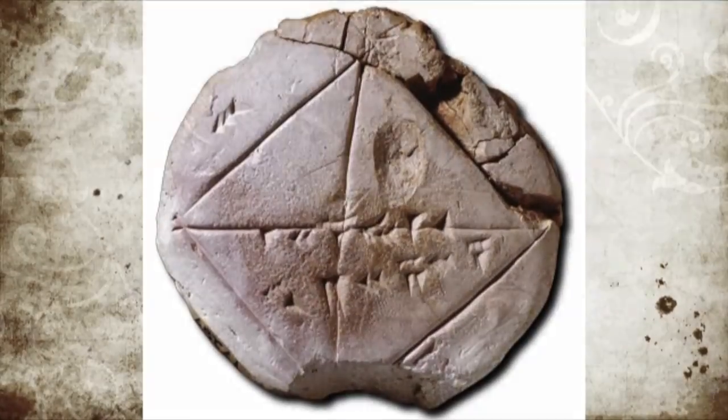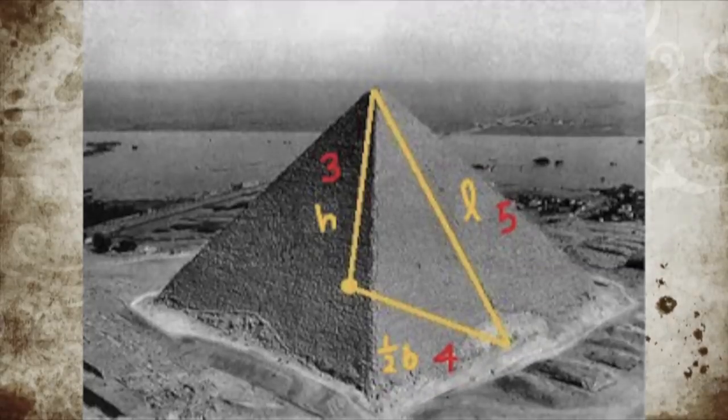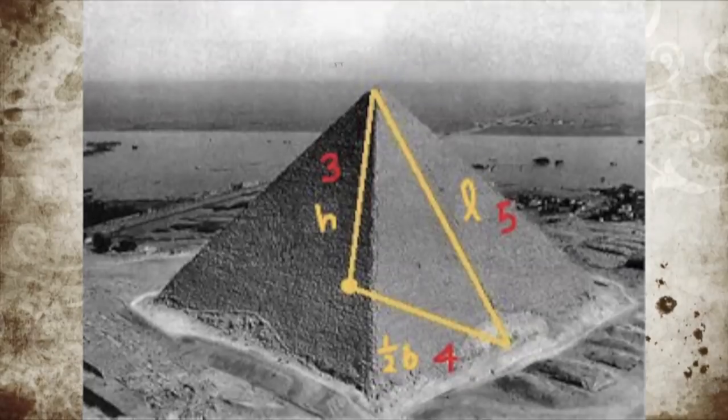However, this knowledge appears to have been lost during later periods in Babylonian history. In addition, there is evidence that the ancient Egyptians used Pythagorean triples to measure land.